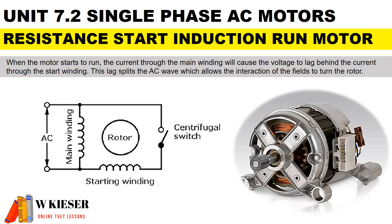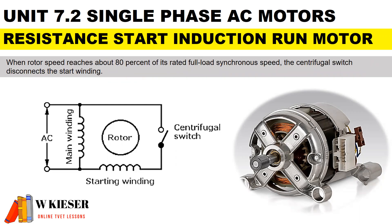When the motor starts to run, the current through the main winding will cause the voltage to lag behind the current through the start winding. This lag splits the AC wave, which allows the interaction of the fields to turn the rotor. When the rotor reaches about 80% of its full-rated synchronous speed, the centrifugal switch disconnects the start winding.